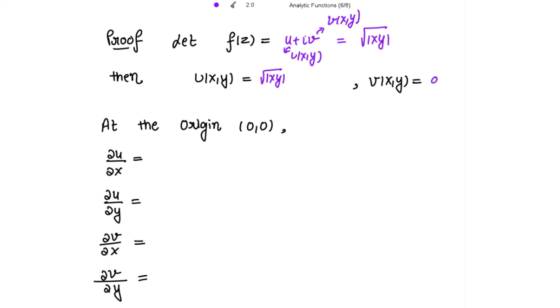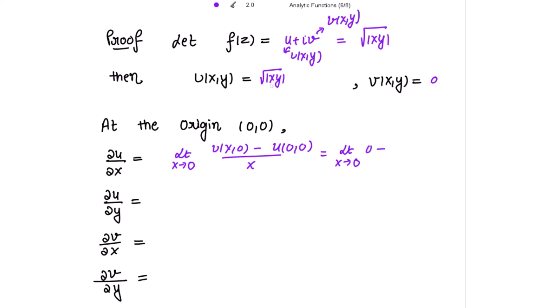Let's check whether the Cauchy-Riemann equations are satisfied at the origin. We need to find ∂u/∂x, ∂u/∂y, ∂v/∂x, and ∂v/∂y. So ∂u/∂x is limit as x→0 of [u(x,0) − u(0,0)] / x. Putting y = 0 in u(x,y) gives 0, and u(0,0) = 0, so this equals 0/x = 0.